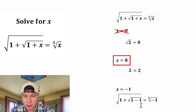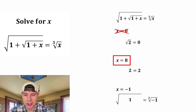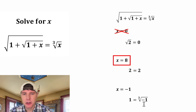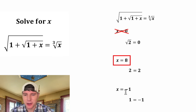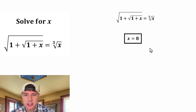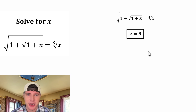For the last one, x equals negative 1: 1 minus 1 is 0 and the square root of 0 is 0; then 1 plus 0 is 1 and the square root of 1 is 1. But the cube root of negative 1 is negative 1 — this is not a true statement, so x cannot equal negative 1. The solution to this equation is x equals 8. How exciting.